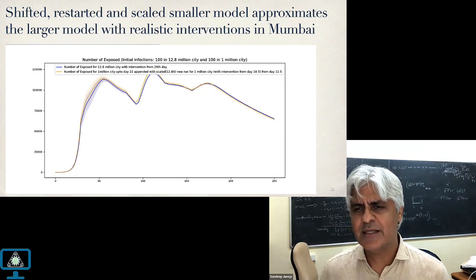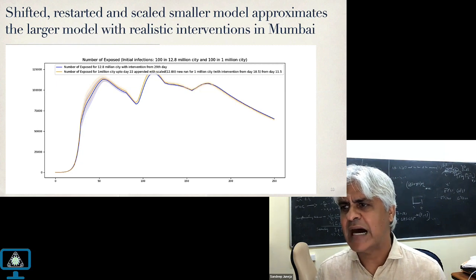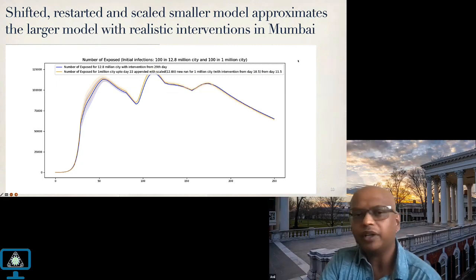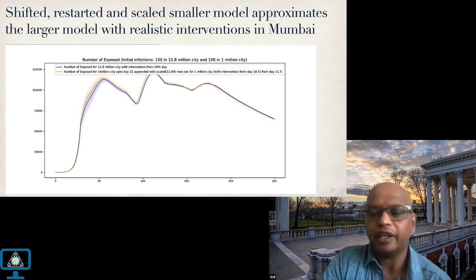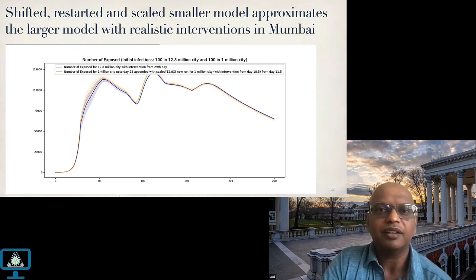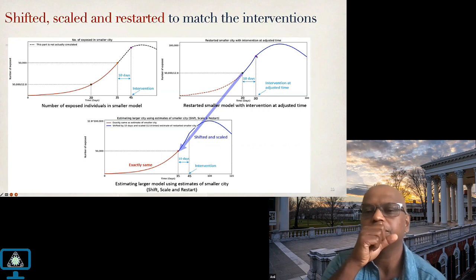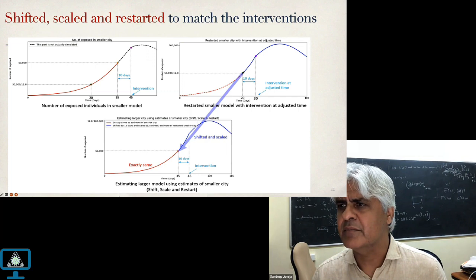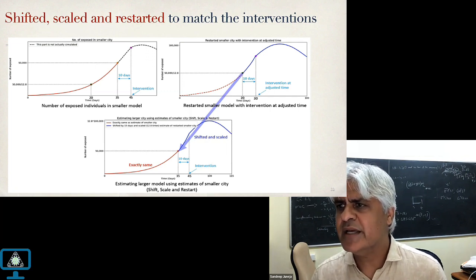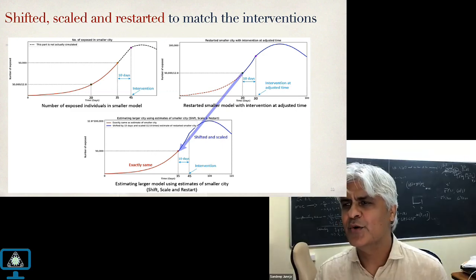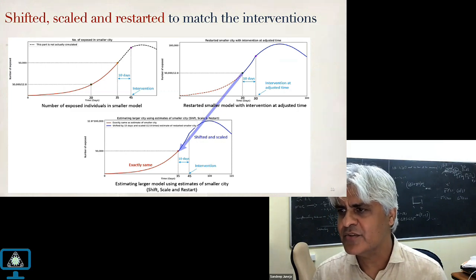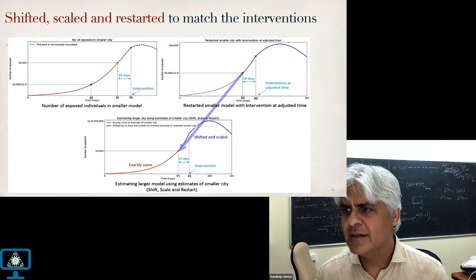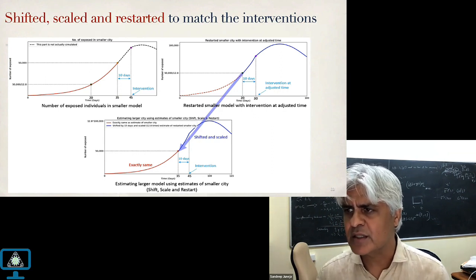When you do the scalings, you take the state of the smaller model at day 20, when the infection count matches what the larger model has — so there's no need to re-spread infections; you carry forward whatever distribution the model gives you. You let the model tell you what the distribution is, which is important because by that time things are no longer random. You start with randomness on day zero, but by day 35, things have changed; proportions have been similar from day 20 to 35, so you could use day 20 from the simulation. Effectively, you only run the small simulation model throughout — first 35 days are the same as the large model, then you shift, scale, and restart.